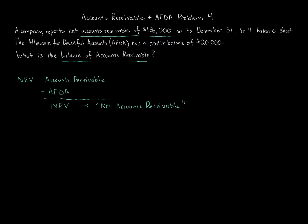The net accounts receivable amount is $156,000. We also have additional information: the Allowance for Doubtful Accounts has a credit balance of $20,000. We can work backwards to solve for the amount of accounts receivable. Before we plug in our AFDA, we have to ask something — we're told AFDA has a credit balance.